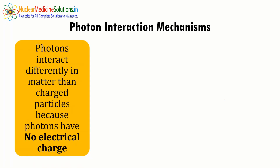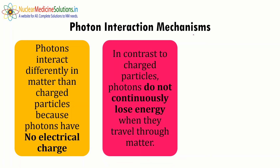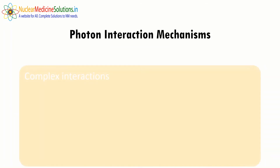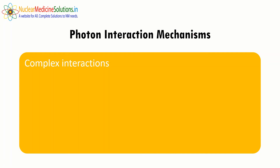Now let's discuss interactions of photons with matter. Photons interact differently than charged particles because they have no electrical charge. In contrast to charged particles, photons do not continuously lose energy as they travel through matter — charged particles do continuously lose energy. The interaction of photons with matter is probabilistic, whereas the interaction of charged particles is certain. There may be cases where a photon does not interact at all with matter.